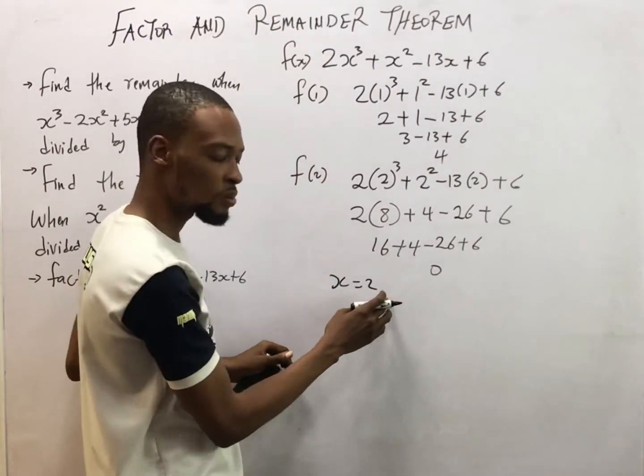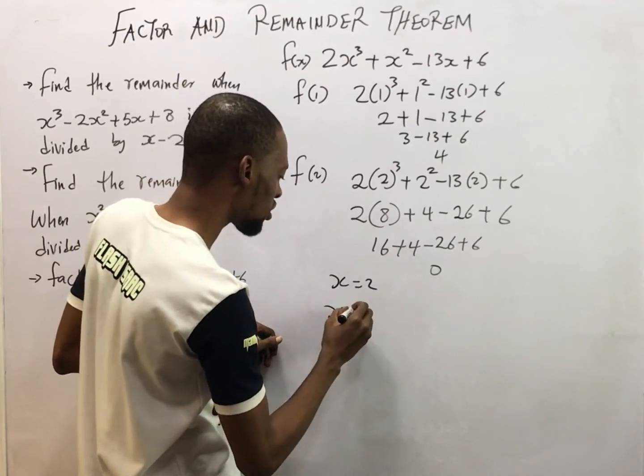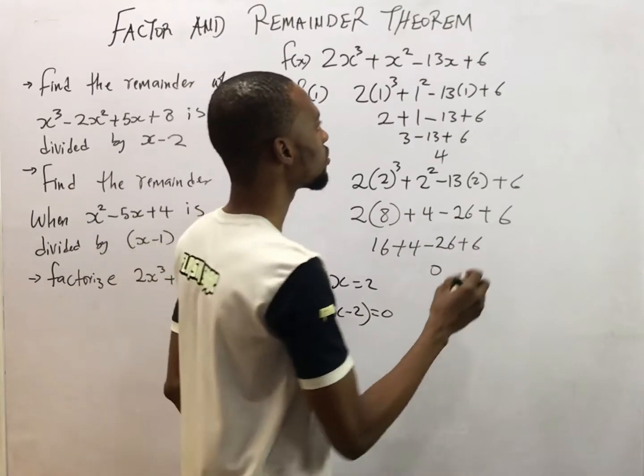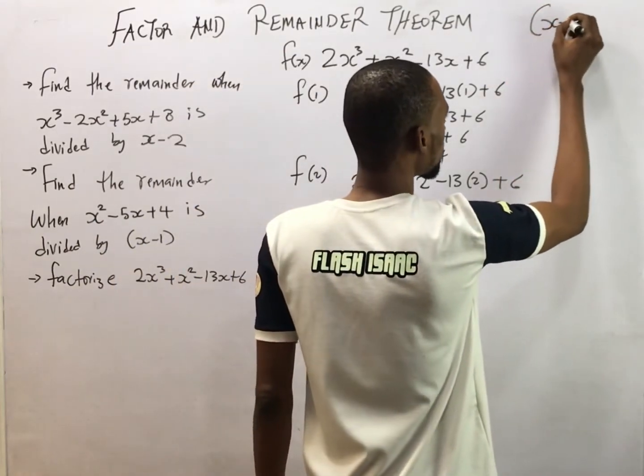If S is equal to 2, this implies that S minus 2 is equal to 0. So this is the first factor. So you keep it somewhere. S minus 2.